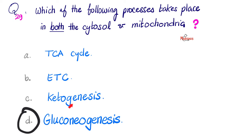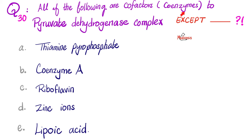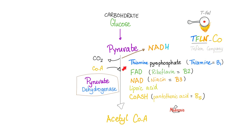Next: all of the following are cofactors or coenzymes of the pyruvate dehydrogenase enzyme complex, with the exception of — is it thiamine pyrophosphate (TPP), coenzyme A, riboflavin, zinc ions, or lipoic acid? The pyruvate dehydrogenase complex needs five cofactors; the mnemonic is TEFLON COMPANY: T = TPP from thiamine (B1), F = FAD from riboflavin (B2), N = NAD from niacin (B3).